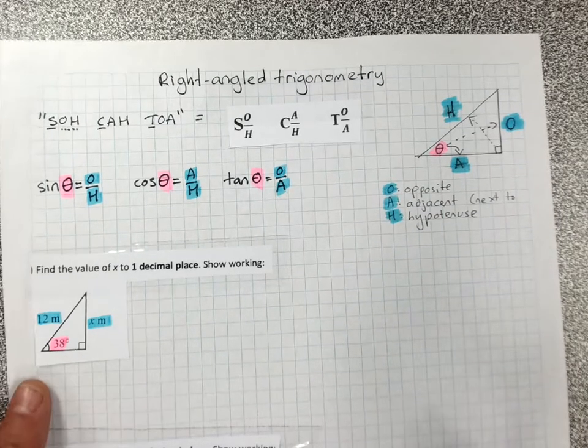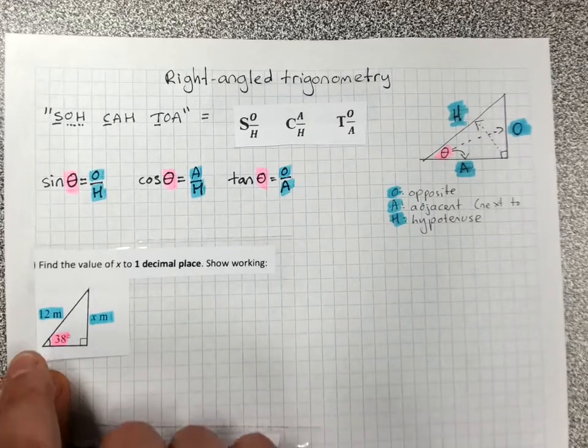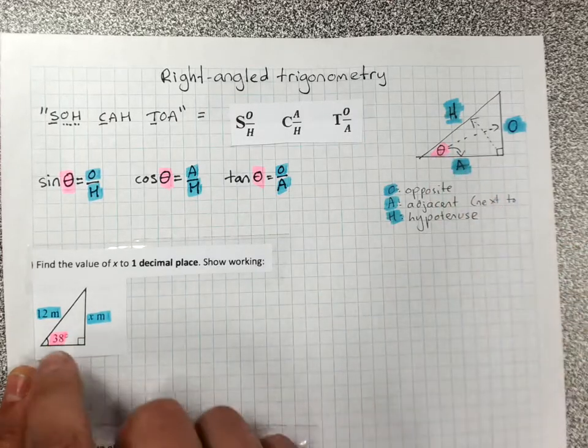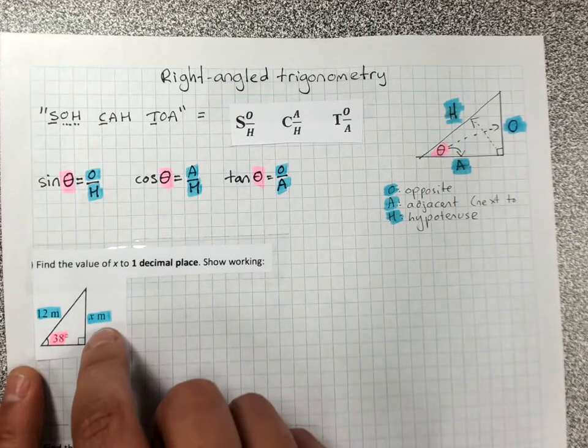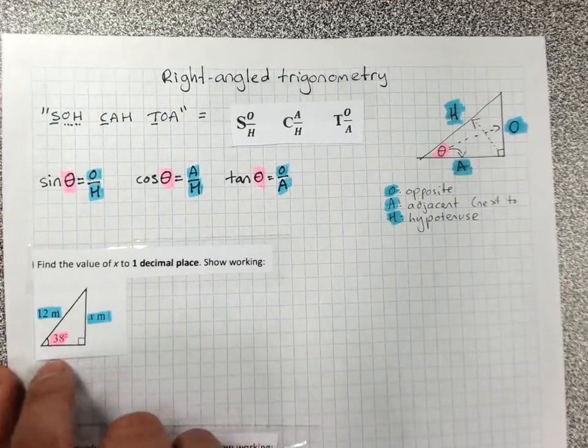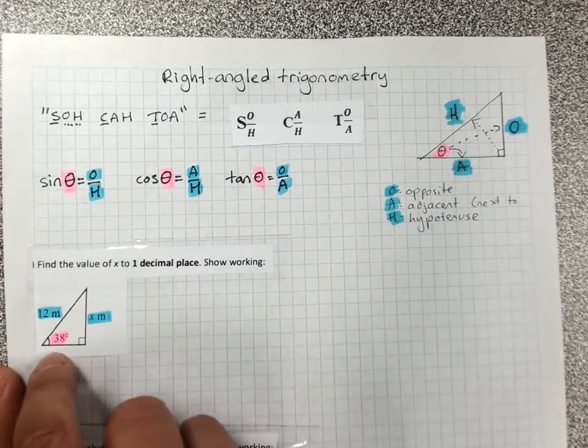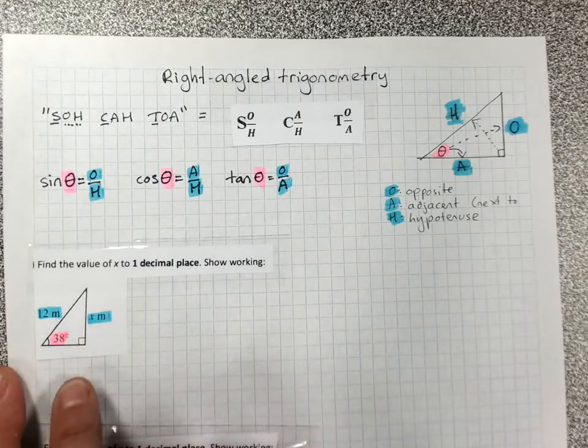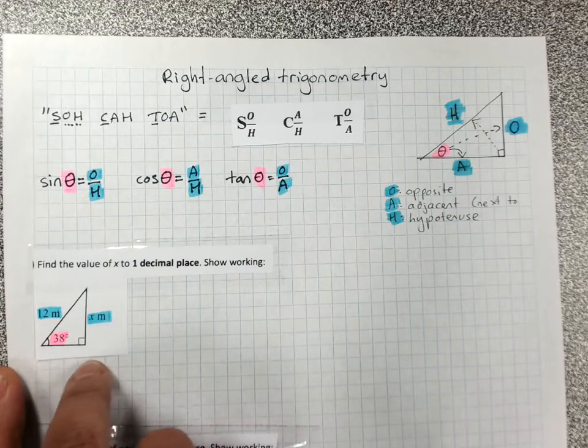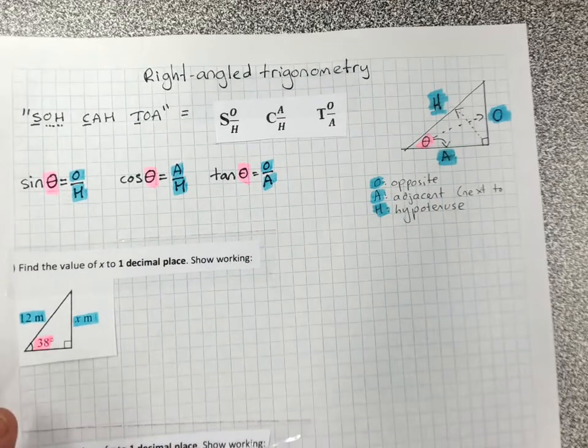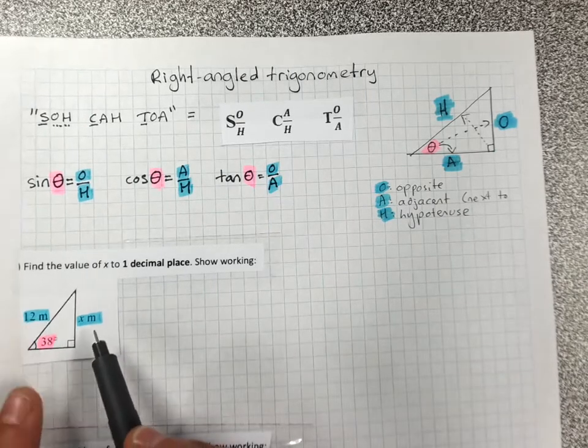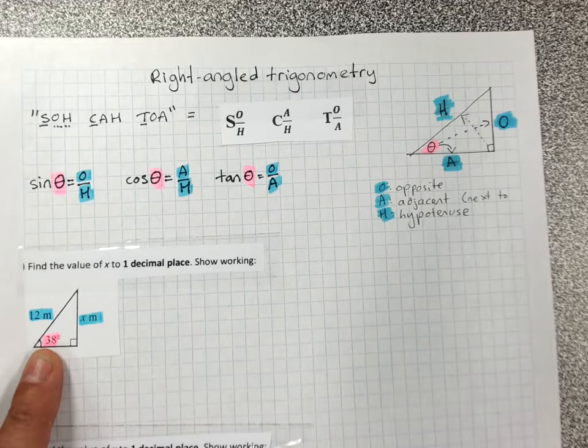Now, I want you to start every trig question by highlighting the angle in one color and highlighting what's labeled on the sides in another color. Now there's nothing written on this side. So I'm not going to put anything there. The angle's inside the triangle, sides are labeled outside and there's nothing there. Pink for angle, blue for sides. Now, our steps for trig, every question, is label the sides.